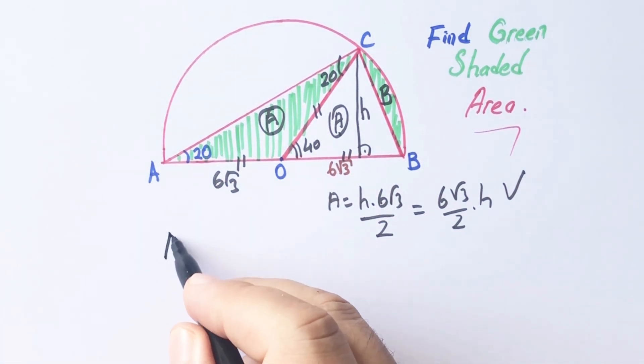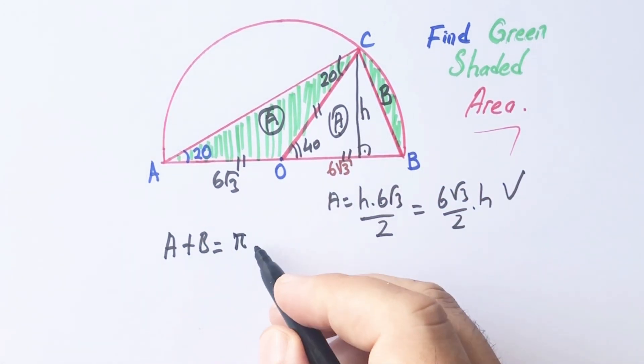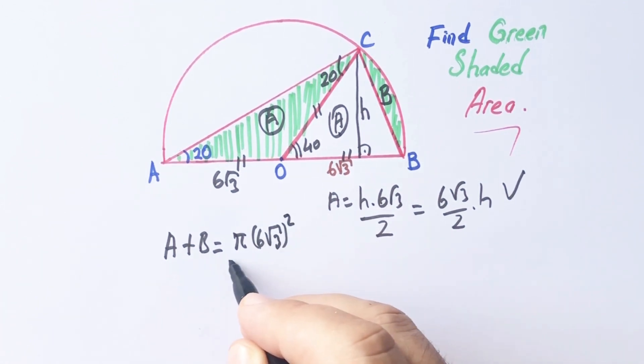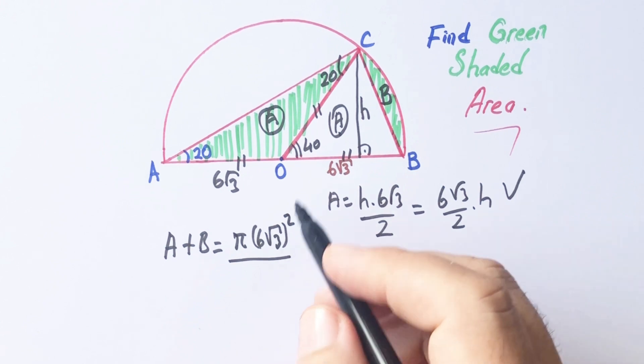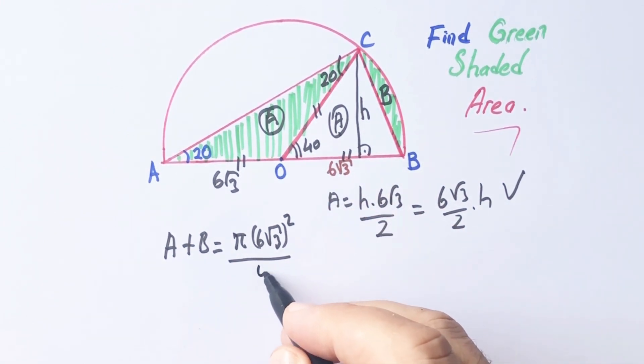How can we calculate this circle-sector area? A plus B equals pi times 6 root 3 squared over 9, because this area equals 1 over 9 of the full circle.